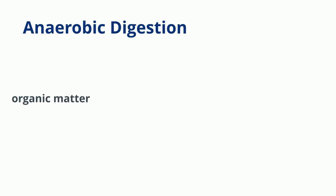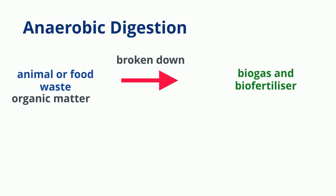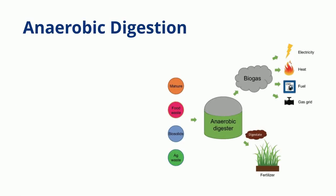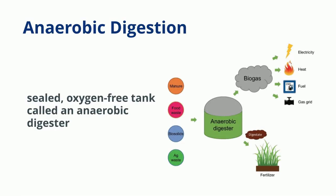Anaerobic digestion is the process by which organic matter such as animal or food waste is broken down to produce biogas and biofertilizer. This process happens in the absence of oxygen, in a sealed oxygen-free tank called an anaerobic digester. The word anaerobic actually means in the absence of oxygen.